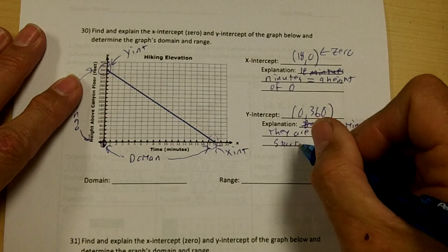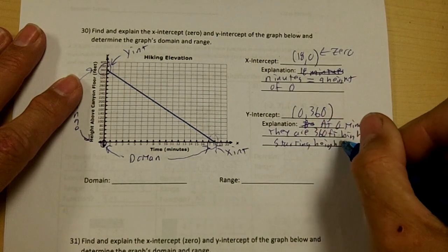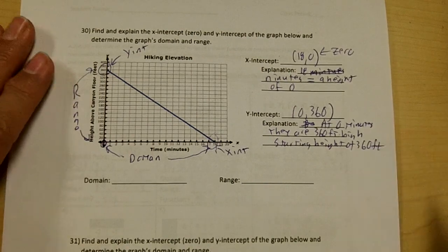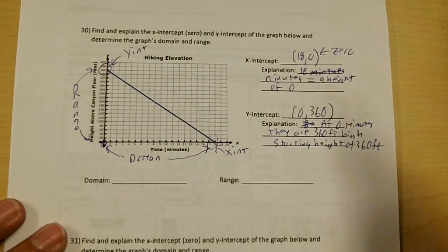Starting height, lots of ways to write this of 360 feet or the initial height of 360 feet. Somehow it's going to be the starting amount.